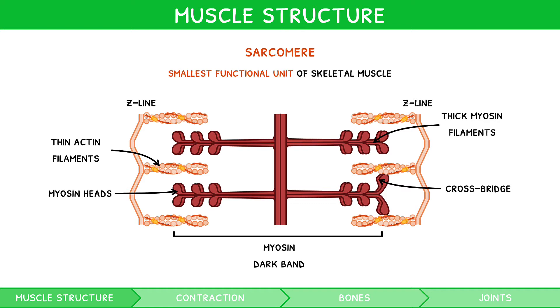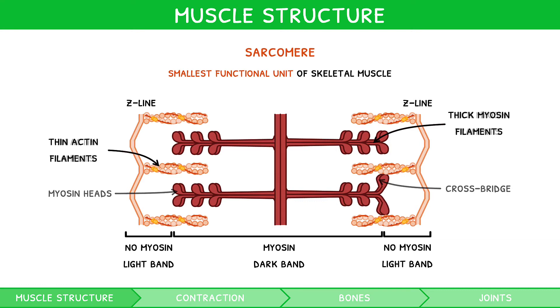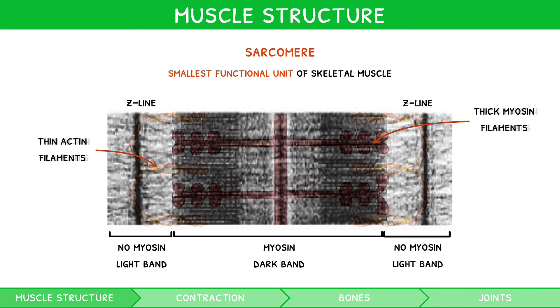Meanwhile, the region where actin is not overlapping is less dense, giving it the name of the light band. You should ensure you are comfortable identifying such segments of a sarcomere on an electron micrograph like this.